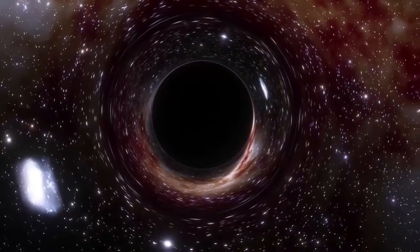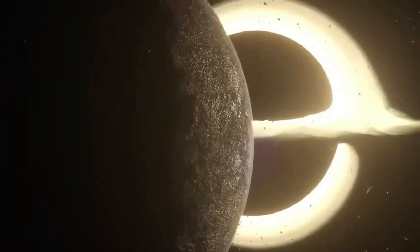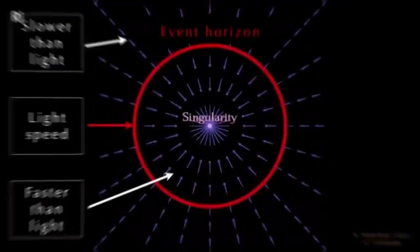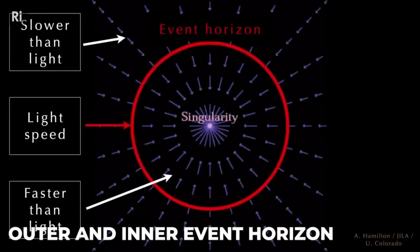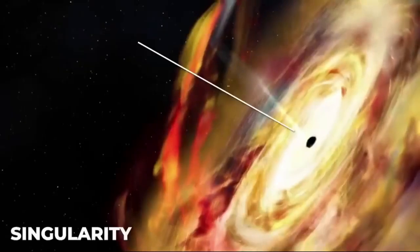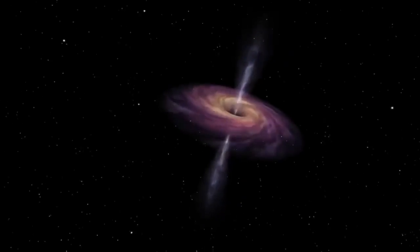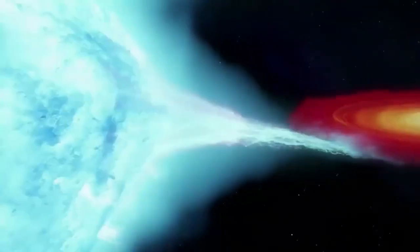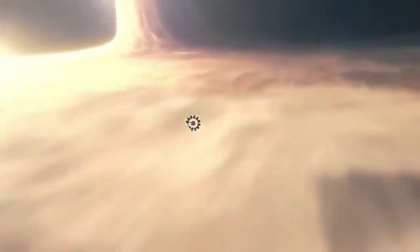Supermassive black holes, on the other hand, are the largest type of black hole. They can be millions or billions of times the mass of the sun and can be found at the heart of most galaxies, including the Milky Way. These black holes are some of the most powerful objects in the universe, and they're thought to play an important role in the evolution of galaxies.